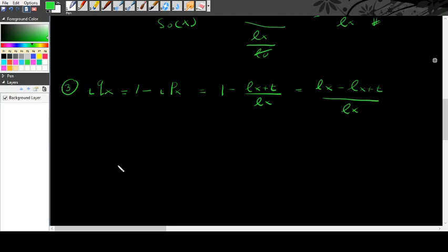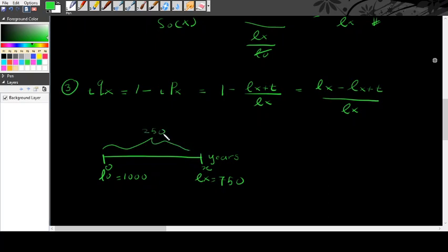Let's look again at the timeline where I have L0 equals 1,000 and Lx equals 750. This is for time x, time 0. The number of people who die here is 250. So to get 250, I took L0 minus Lx.